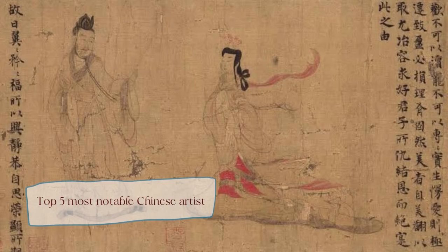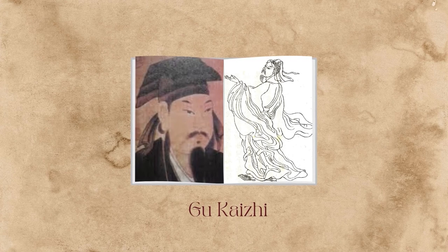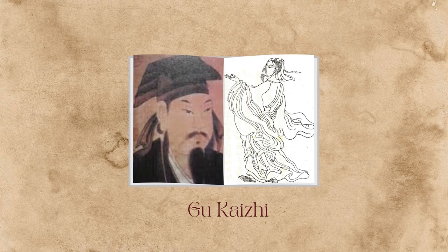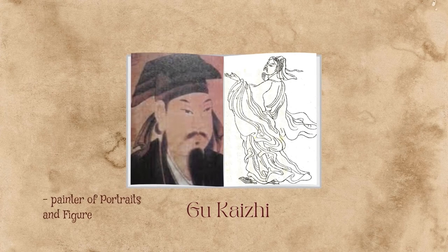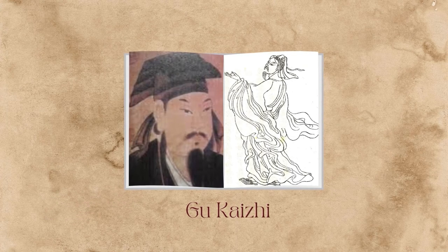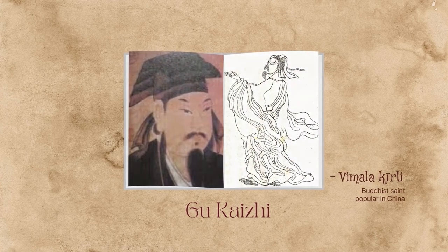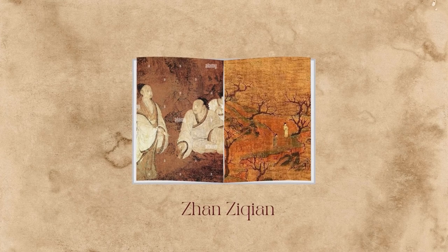Now the top five most notable famous Chinese artists. First is Gu Kaizhi, born in modern Wuxi. He was one of the earliest many-faceted artists in China — an eccentric courtier most famous as a painter of portraits and figure subjects, and also as a poet. He is recorded as having been among the first to paint a representation of Vimalakirti.